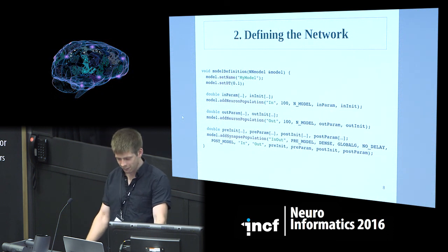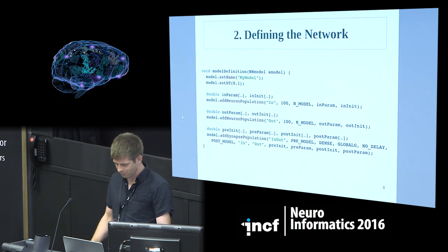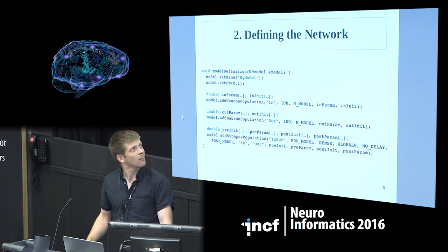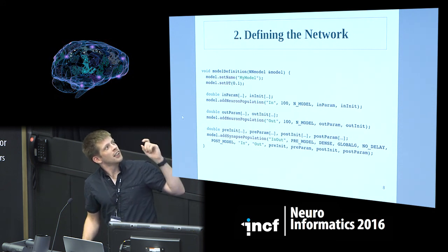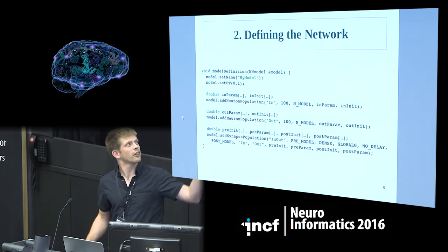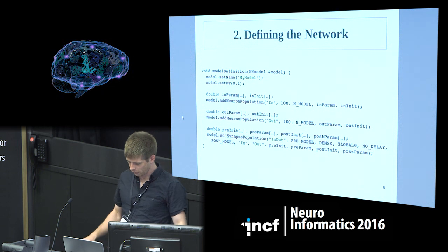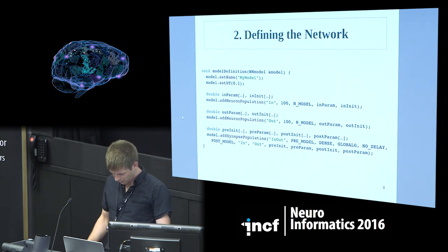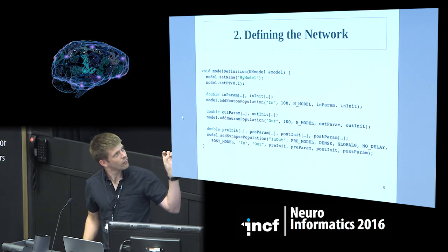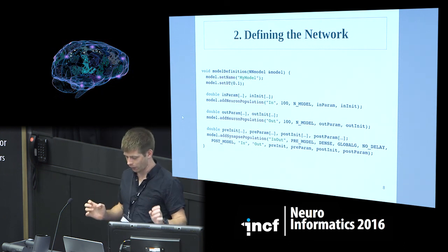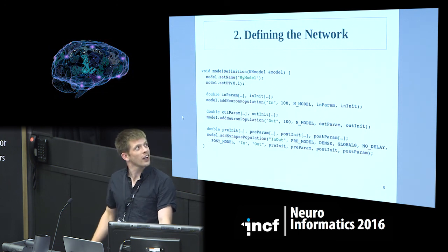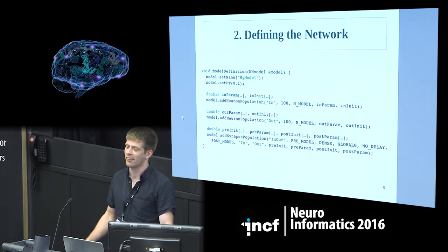Once you've defined your models, you connect everything together using a model definition function. Inside it you define your model name as a string, your integration step size dt, and then add your neuron populations — giving each a name, a number of neurons, and the neuron model defined earlier. You then define your synapse populations, which take a name, the in-group, the out-group, the pre-synaptic model, and the post-synaptic model. We also have synaptic delays. Parameters are passed as arrays and C++ vectors.